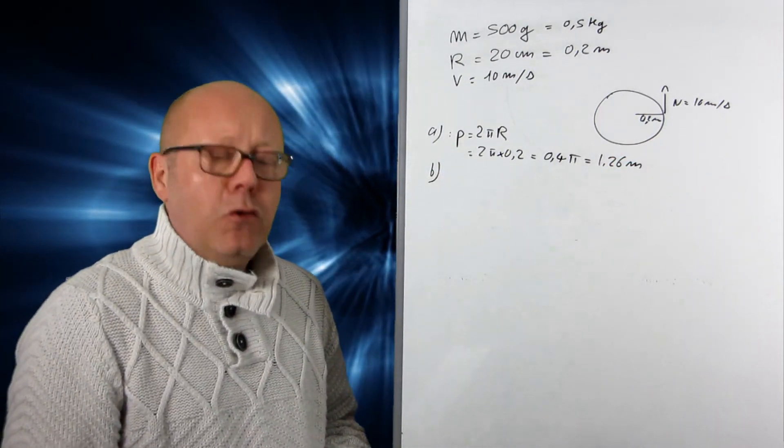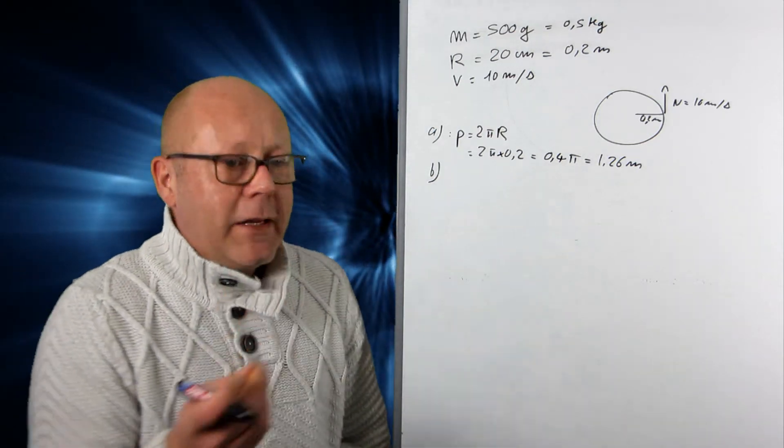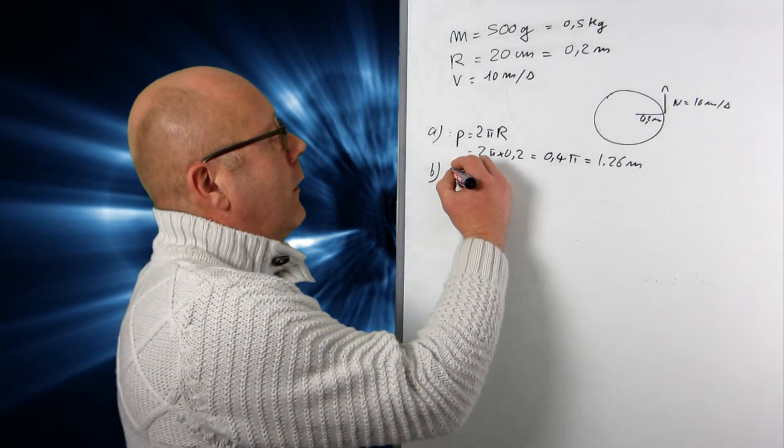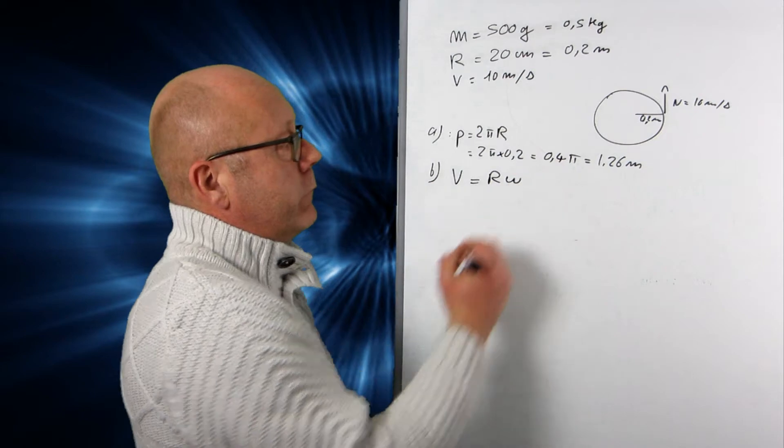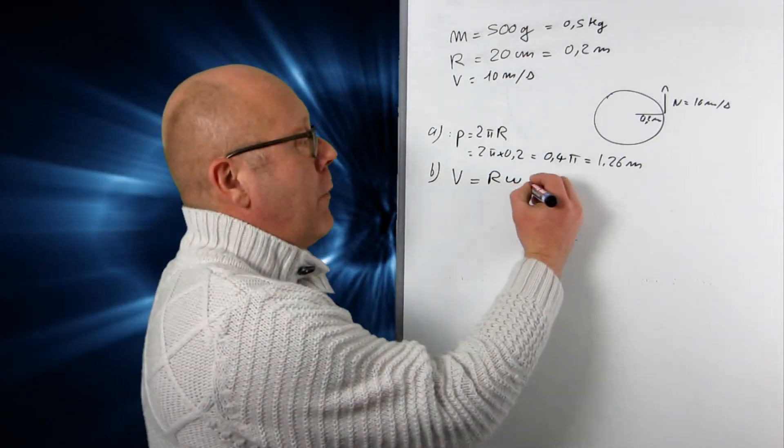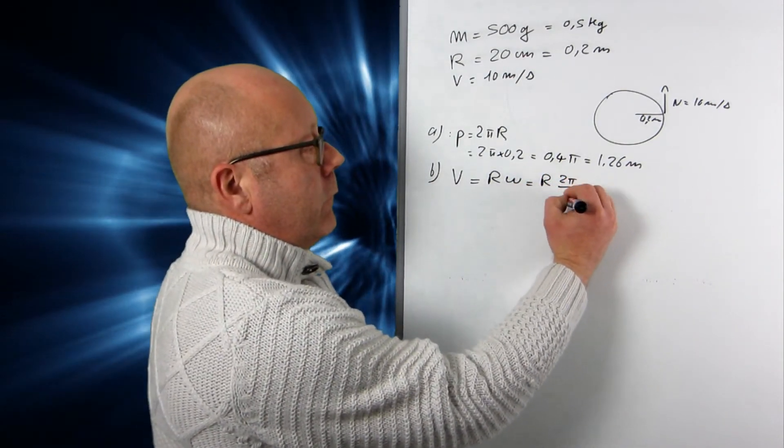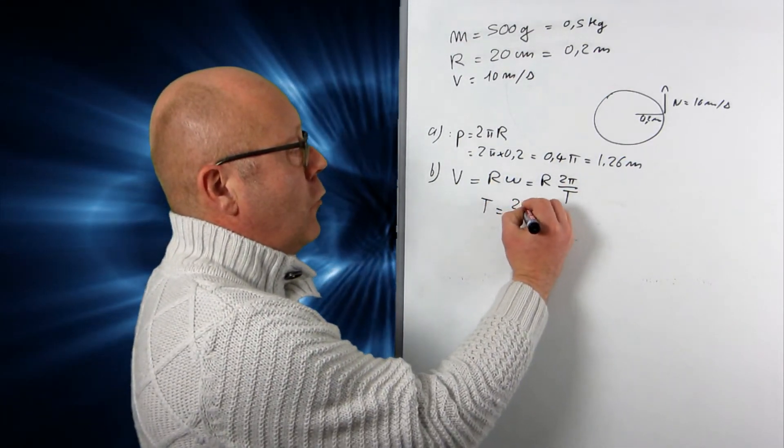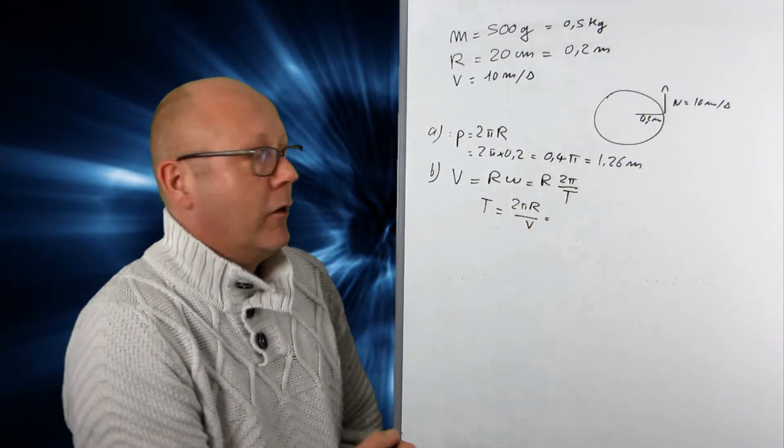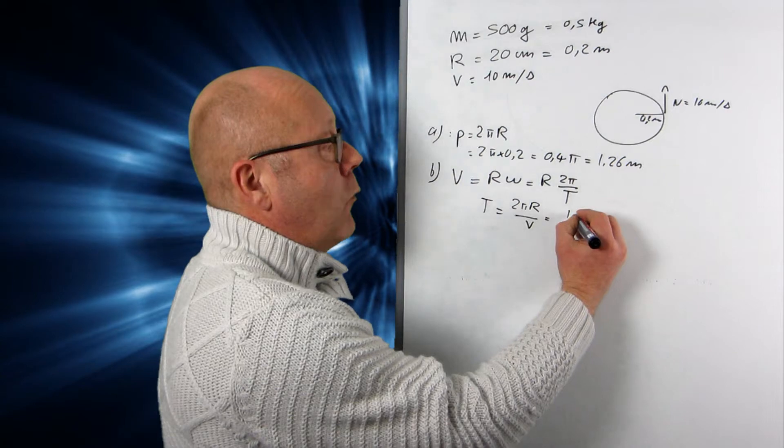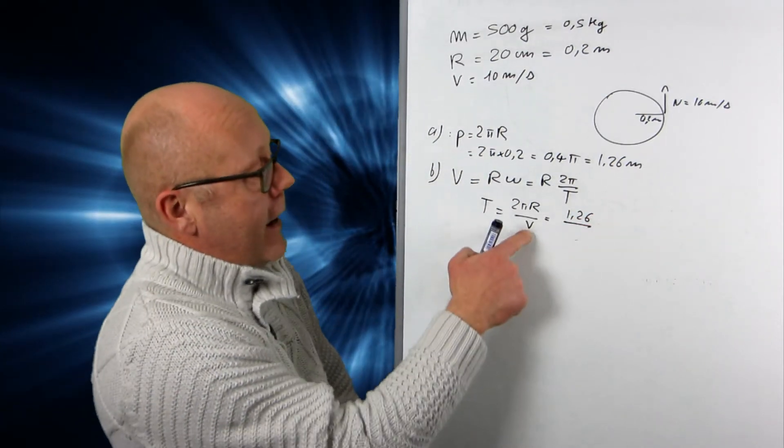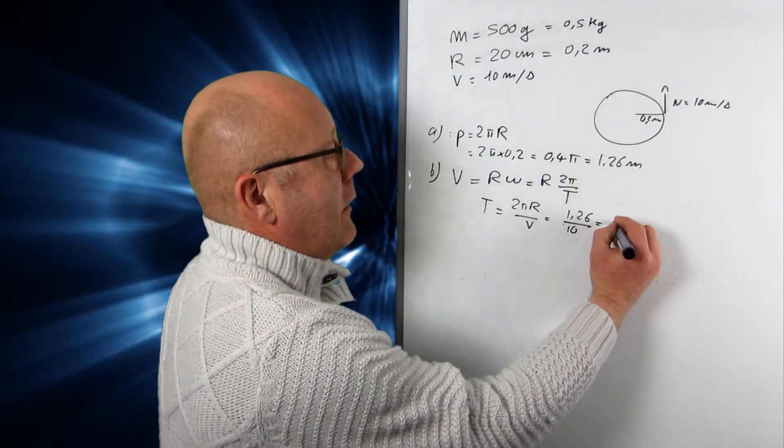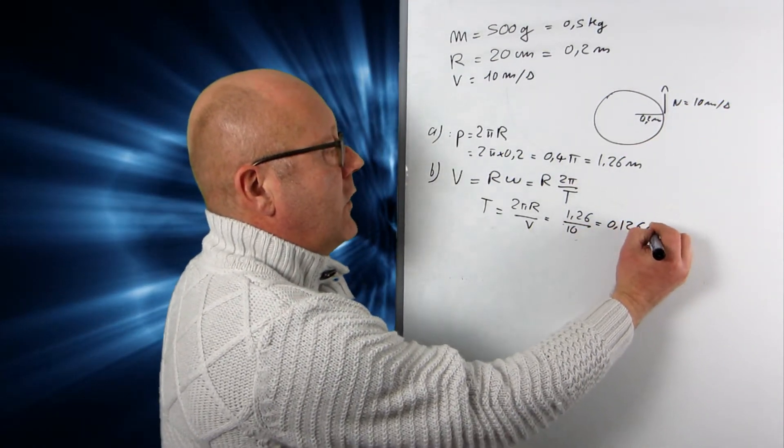Little b. The time taken for one revolution. Well, the time taken for one revolution is the period. So I need to find the period. I can start with v equals r omega. Because I know that omega is 2π on T. Therefore, by rearranging this, I can find T. T equals 2πr on v. And then I plug in the numbers. 2πr is the perimeter, so I can just plug in 1.26. And the velocity, or the speed, excuse me, is 10 meters per second. So I'm giving you 0.126 seconds for the period.